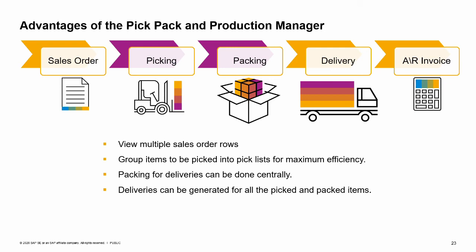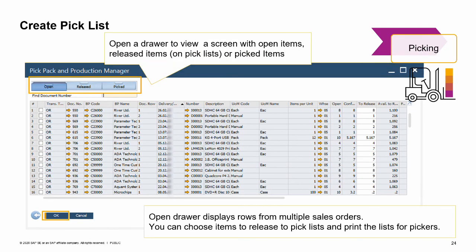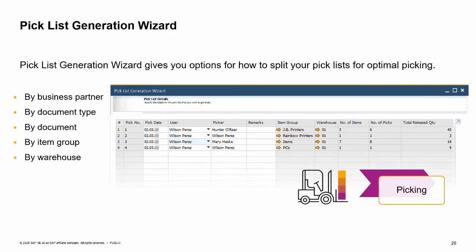This course topic introduces you to the concepts behind the pick-pack and production manager. For more details on this subject, see the three course topics that focus solely on pick and pack. In our business example, the warehouse manager opens the pick-pack and production manager and sets the selection criteria to pull up all the upcoming deliveries for the week. The pick-pack and production manager displays three drawers: open for items not yet on a pick list, released for items that have been released to a pick list, and picked for all the items already picked. In the open drawer, he sees the sales order rows and the rows of many other sales orders. He chooses the items to release to the pick list and prints pick lists for all the pickers in the warehouse. When items are released to a pick list, the pick list generation wizard opens.